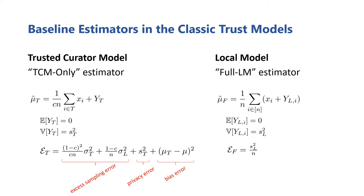The bias error similarly stems from only using the data of the TCM users. However, this error is induced because the distributions between the two groups may be different. Looking at the full LM estimator's error expression, it's much simpler because there's no excess sampling or bias errors, since the data of all users is used. Instead, there's only the error that stems from ensuring differential privacy. From these, we can intuitively expect that the full LM estimator will perform relatively well when its privacy error is low, when the data variance is high, or when the two groups' distributions significantly differ.